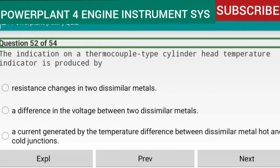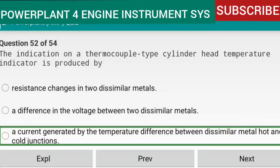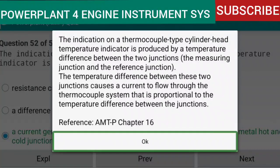Question 52 of 54: The indication on a thermocouple type cylinder head temperature indicator is produced by a temperature difference between the two junctions — the measuring junction and the reference junction. This temperature difference causes a current to flow through the thermocouple system that is proportional to the temperature difference between the junctions. Reference: AMTP Chapter 16.